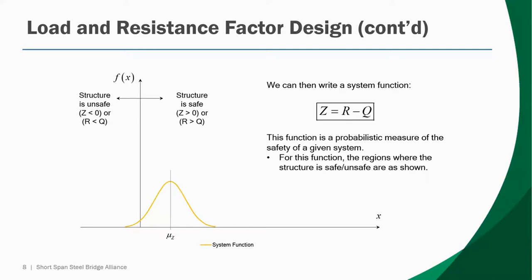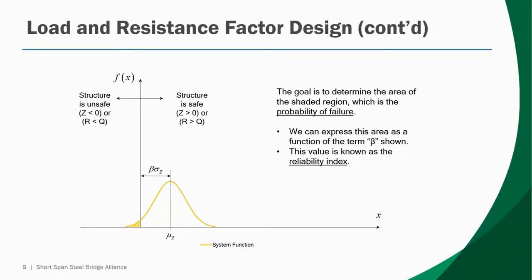With loads and resistances modeled separately, we can develop a new curve modeled by the system function — the resistances minus the loads. This curve provides a simple illustration of structural safety. Any time this equation is greater than zero, the resistances are larger than the loads, meaning the structure is safe. Because probability distributions go on forever, there will be instances where loads are larger than resistance and the structure is unsafe. With ASD, we cannot guarantee uniform levels of safety, but with LRFD, that's how specifications are calibrated. In LRFD, the goal is to manage the probability of failure — the shaded area under the curve where the structure would be unsafe.